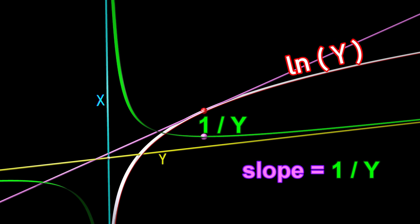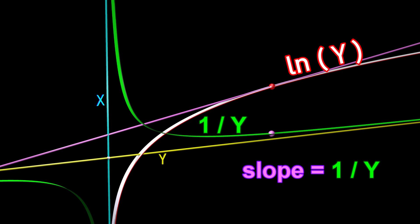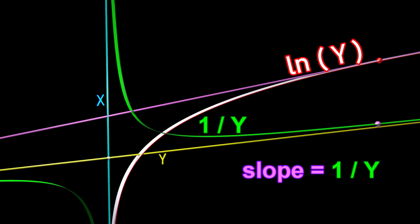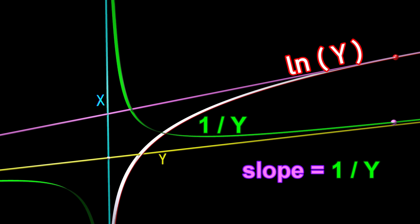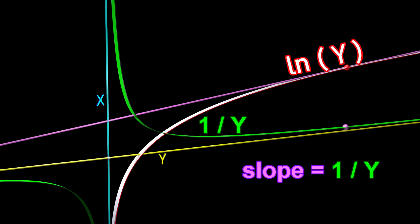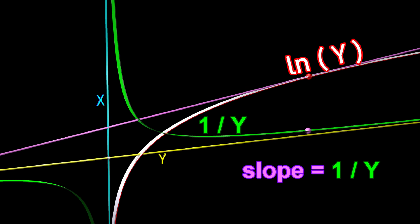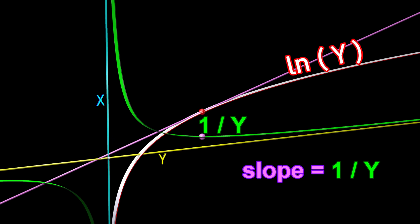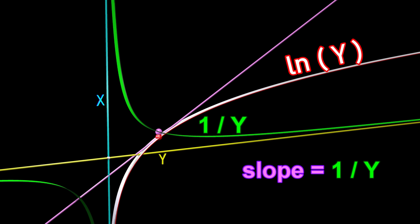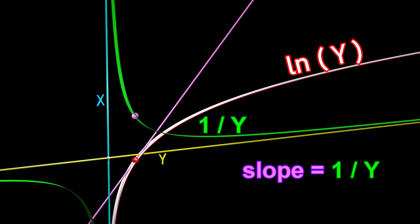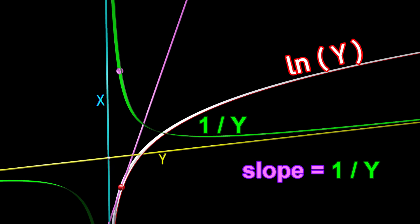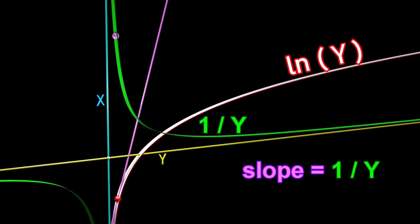As the height of the purple sphere approaches zero, the slope of the purple line approaches zero. As the height of the purple sphere approaches positive infinity, the slope of the purple line approaches positive infinity.